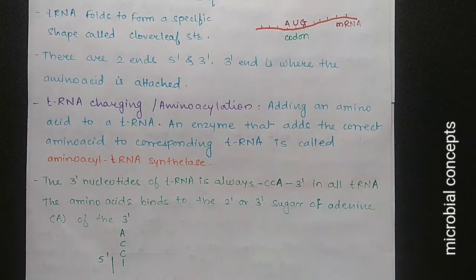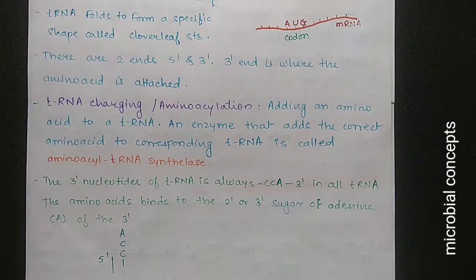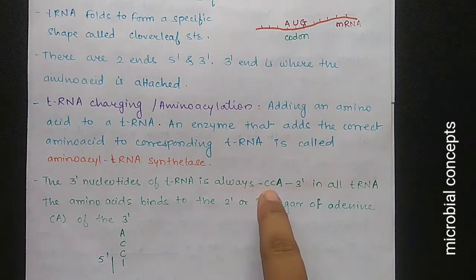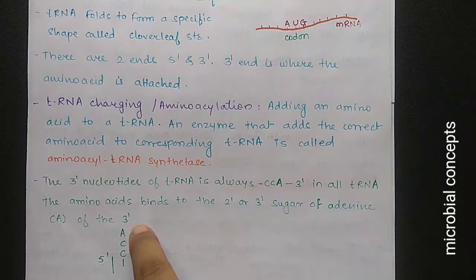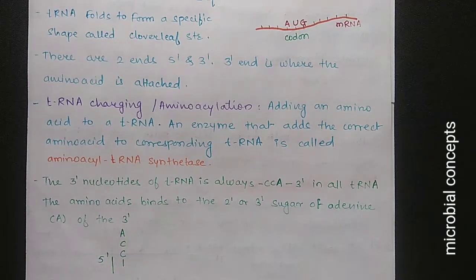tRNA charging, or aminoacylation, is the process of adding an amino acid to a tRNA. The enzyme that adds the correct amino acid to the corresponding tRNA is called aminoacyl-tRNA synthetase. The 3 prime nucleotide sequence of tRNA is always CCA, and the amino acid binds to the second or third sugar of the adenine at the 3 prime end.